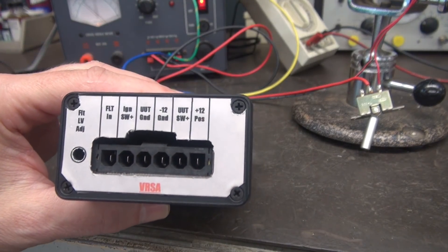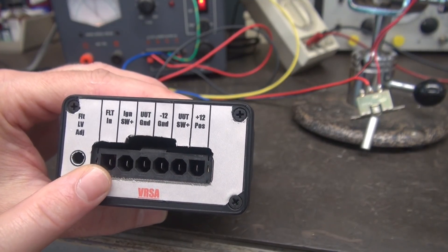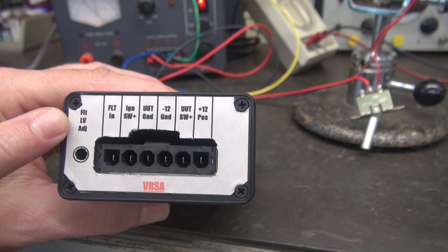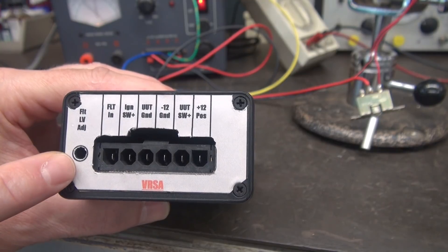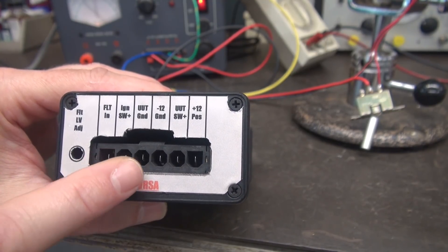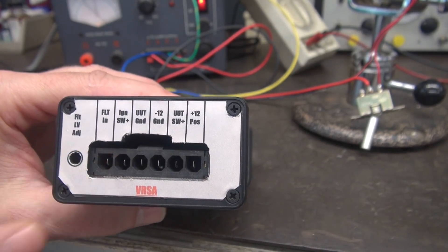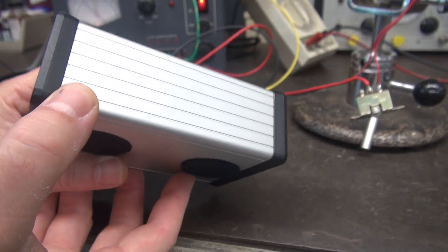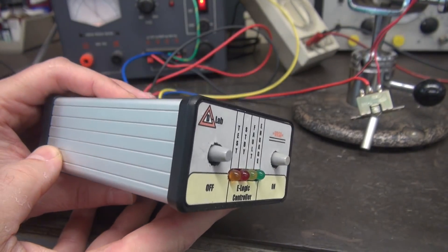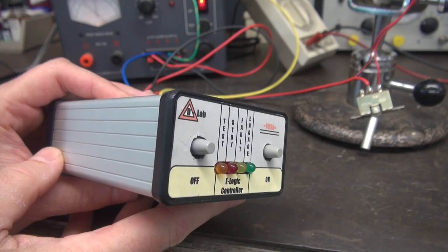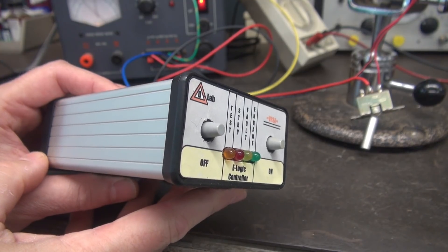Here's the rear of the unit. This is the interface for the Molex connector. You can see this fault level adjustment with a pot in there. The pins are identified for their function. This unit was developed to work on 12 volts, but I can build these to work on 24 volts, 120 AC, or 220.